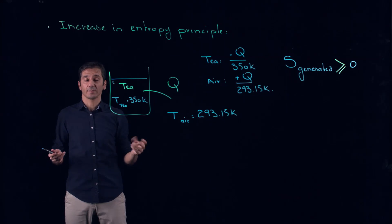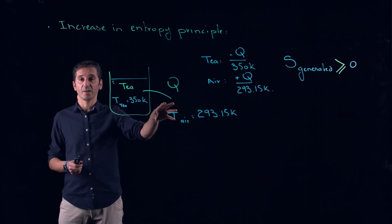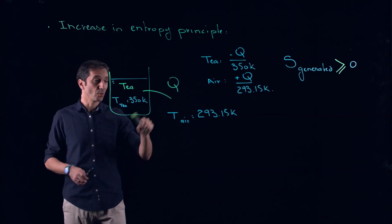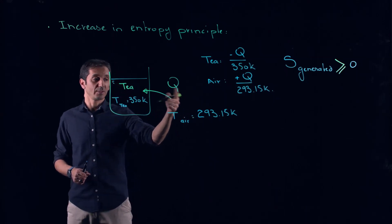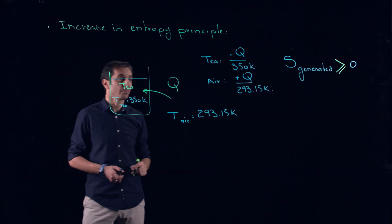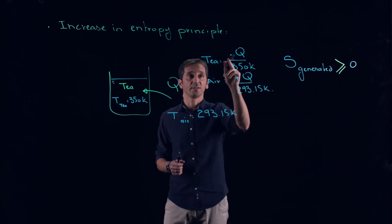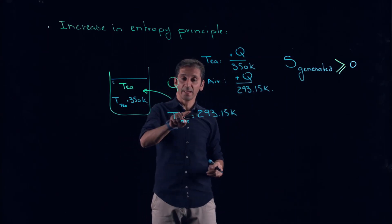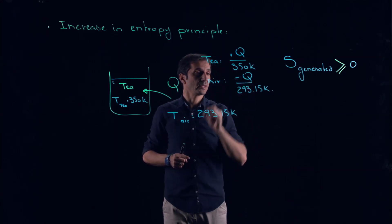Now let us try to do the inverse — extract heat from the air to heat up my cup of tea, going from cold to hot. Heat is now flowing from the air to the tea. The tea is now receiving Q, so it's a Q in and must be positive. The air is losing Q, so it's a Q out for the air — I just have to put a minus sign.